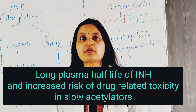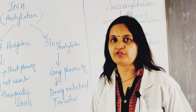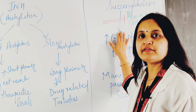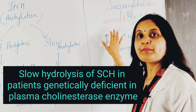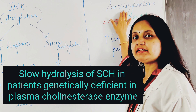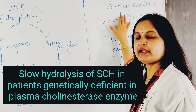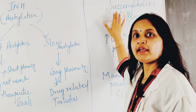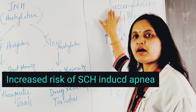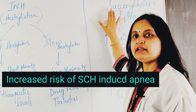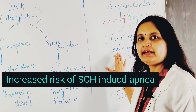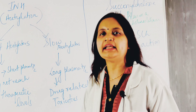The second pharmacogenetic example is succinylcholine, a neuromuscular blocker used in anesthesia. Succinylcholine is metabolized by a plasma pseudocholinesterase enzyme. Patients who are genetically deficient in this enzyme have a reduced capacity to hydrolyze succinylcholine, leading to increased concentration in the plasma and a longer plasma half-life. This results in a prolonged action of succinylcholine, which manifests as paralysis and succinylcholine-induced apnea.